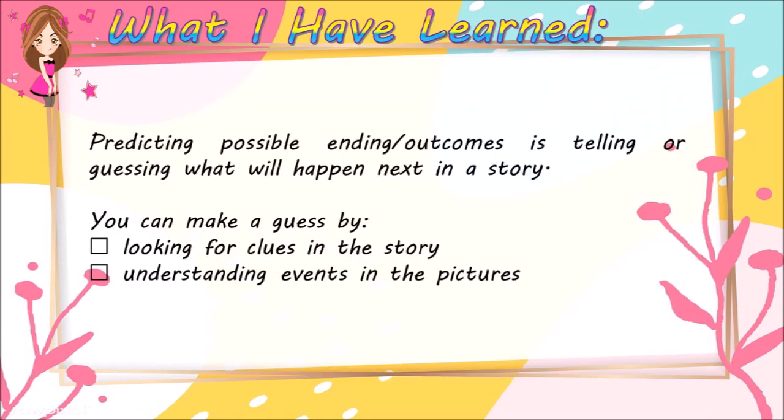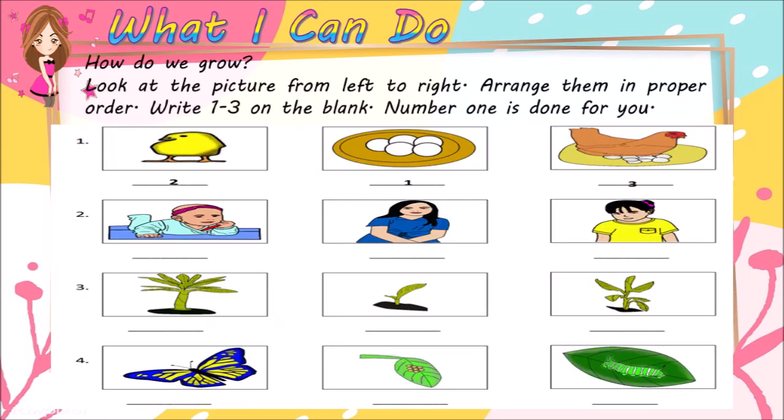Predicting possible endings or outcomes is telling or guessing what will happen next in a story. You can make a guess by looking for clues in the story and understanding events in the pictures. How do we grow? Look at the picture from left to right. Arrange them in proper order. Write 1 to 3 on the blank. Number 1 is done for you.